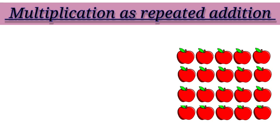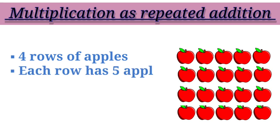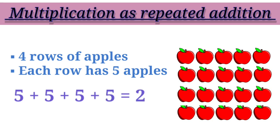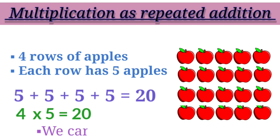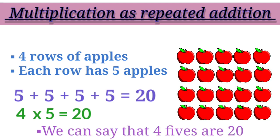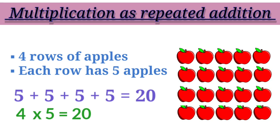Let's do one last example. We have four rows of apples. Each row has five apples, which means we have to add five how many times? Yes, we have to add five four times. That means five plus five plus five plus five equals to twenty, or four multiplied by five equals to twenty. We can say that four fives are twenty. Children, four multiplied by five is same as five multiplied by four. Even if we switch the place, the answer will remain same.